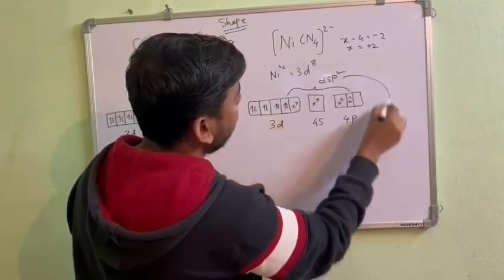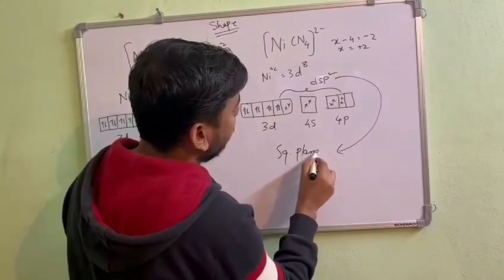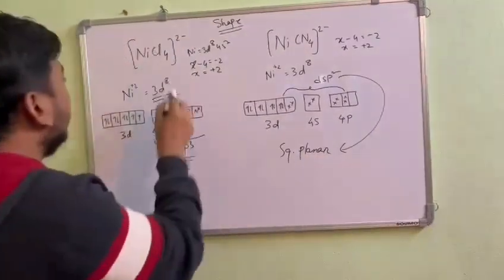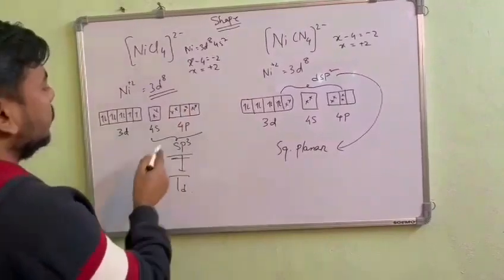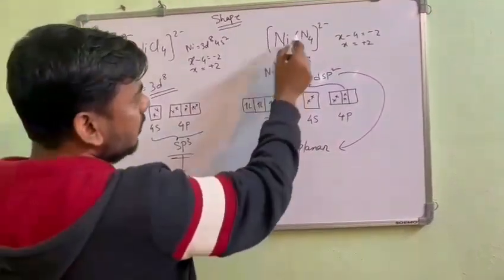Since it is dsp2, it is square planar. So remember, since it is chlorine, it is not able to pair this electron and that's why it is sp3 and tetrahedral. But here, since CN is a strong ligand, it will make pairing and hybridization is dsp2, and that's why it is square planar.